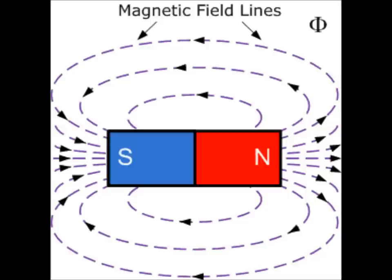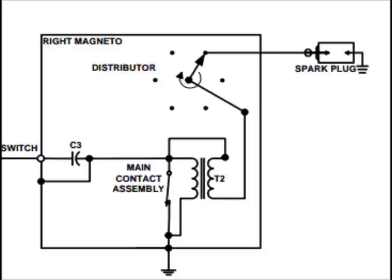The current from the primary winding flows to both the breaker points and the capacitor, which are wired in parallel. When the breaker points are closed, the primary winding is grounded and the current flows directly into the case.